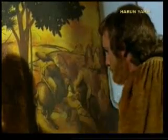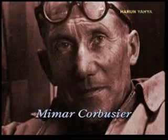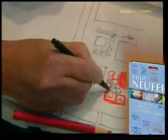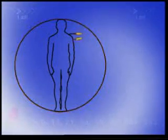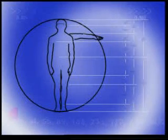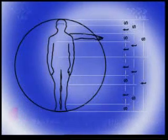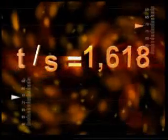Sanatçılar, bilim adamları ve tasarımcılar araştırmalarını yaparken ya da ürünlerini ortaya koyarken altın orana göre belirlenmiş insan bedenini ölçü olarak alırlar. Leonardo da Vinci ve Corbusier de tasarımlarında bu oranı kullanmışlardır. Günümüz mimarlarının en önemli başvuru kitaplarından biri olan Neufert'te de altın orana göre belirlenmiş insan vücudu temel alınmaktadır. Bu şemada yer alan T bölü S oranı her zaman altın orana denktir.